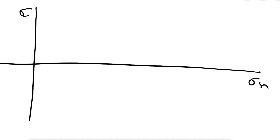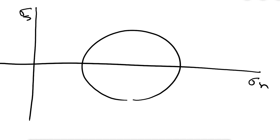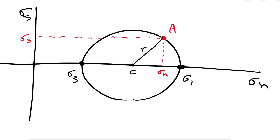Let me redo this one more time. The x-axis is sigma n (normal stress), the y-axis is sigma s (shear stress). On the Mohr circle, we have sigma 3 on the left intersection, sigma 1 on the right, center C, and radius R. For a given point A on the circle, the angle is 2θ. By applying trigonometry to the triangle with hypotenuse R, you can obtain sigma n and sigma s for that point.